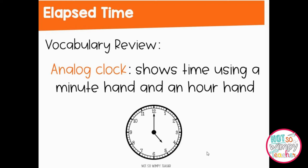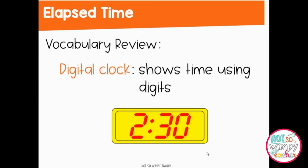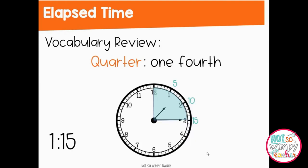Another piece they're going to need to have a really strong foundation in as well is vocabulary. There's a lot of vocabulary associated with elapsed time and the questions they'll be asked to assess that skill. Making sure that students really understand things like analog clock, the hour hand, the minute hand, a digital clock — all of those vocabulary terms are super helpful leading students into their work with elapsed time.